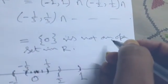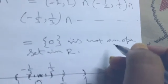The singleton {0} is not an open set in ℝ. Therefore, the intersection of an infinite number of open sets in a metric space may not be an open set. This ends our discussion today. If you like this video, like it, share it, and don't forget to subscribe to the channel. Thanks for watching.